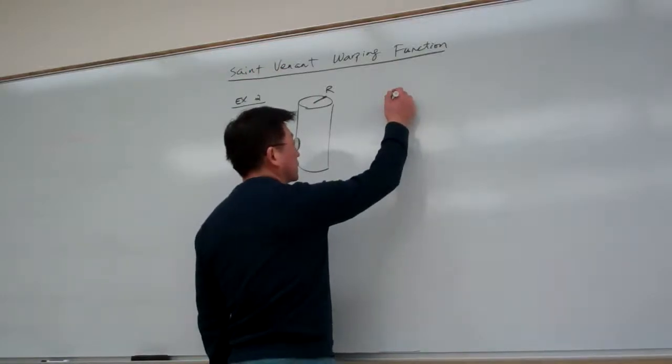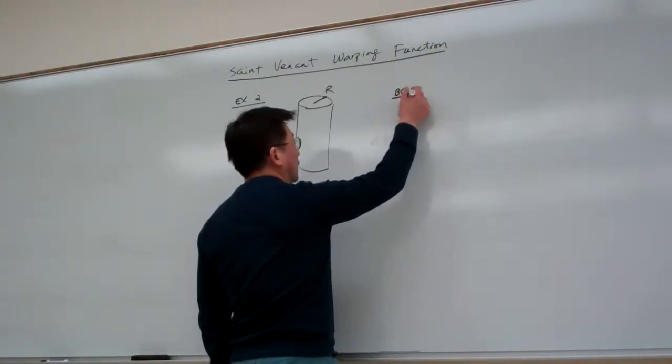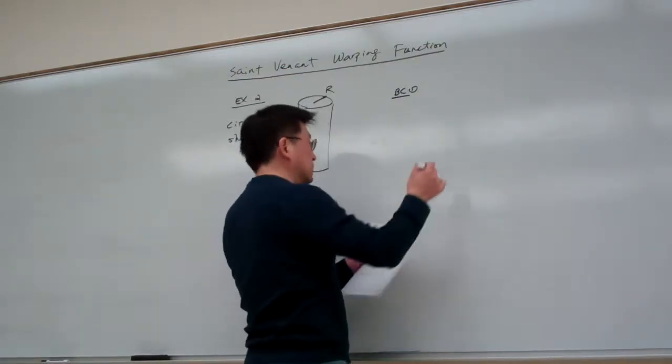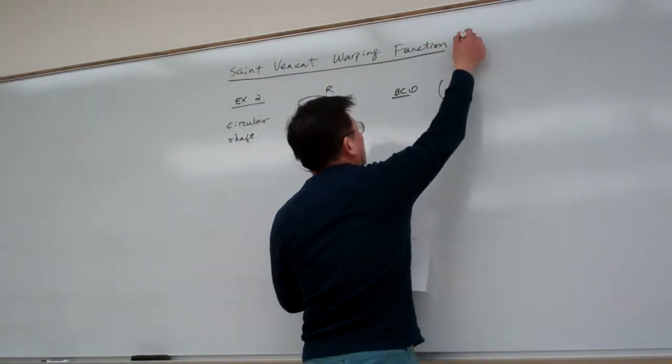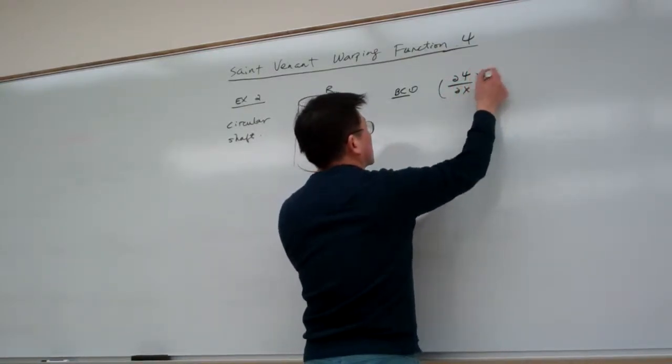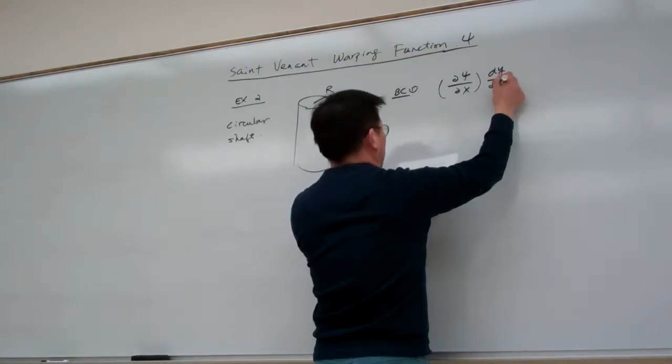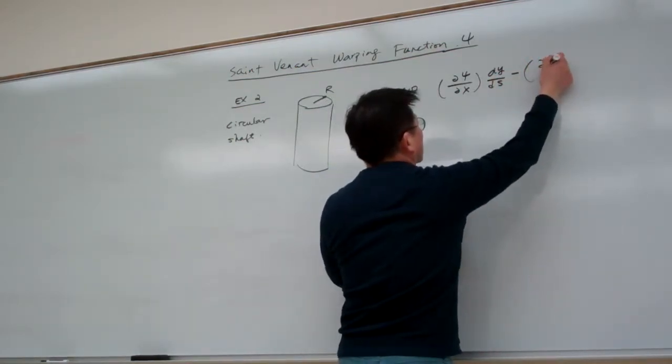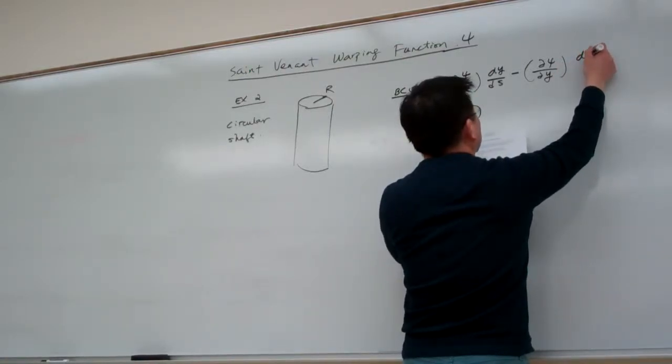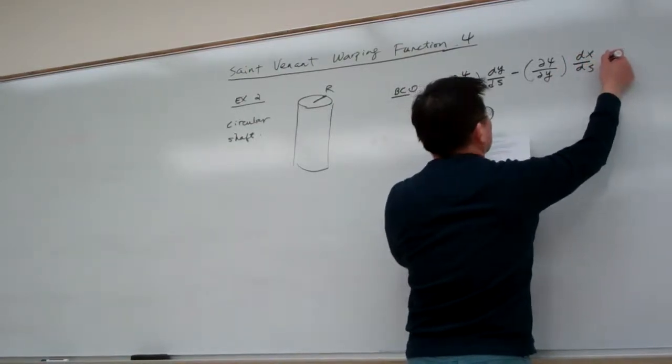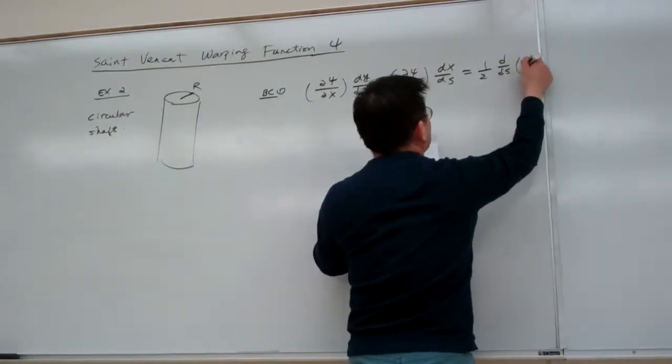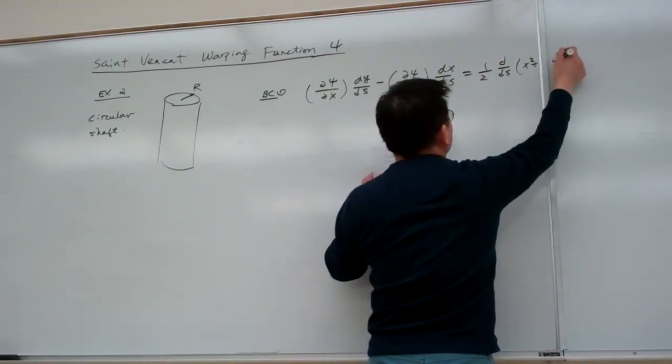Let me write the boundary conditions. From the one we had before, the boundary condition says: ∂ψ/∂x dy ds minus ψ ∂/∂y dx ds equals one half ds times x squared plus y squared.